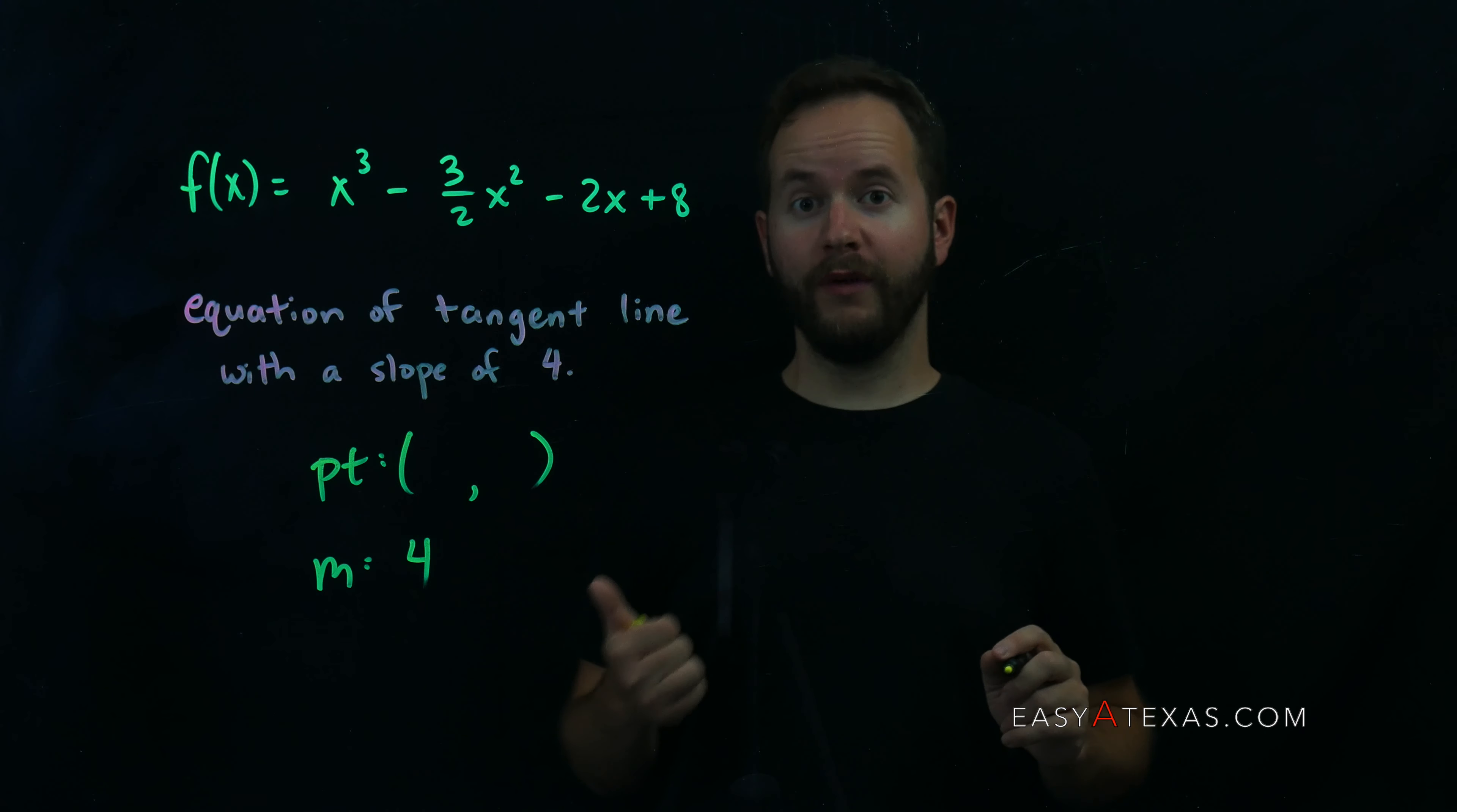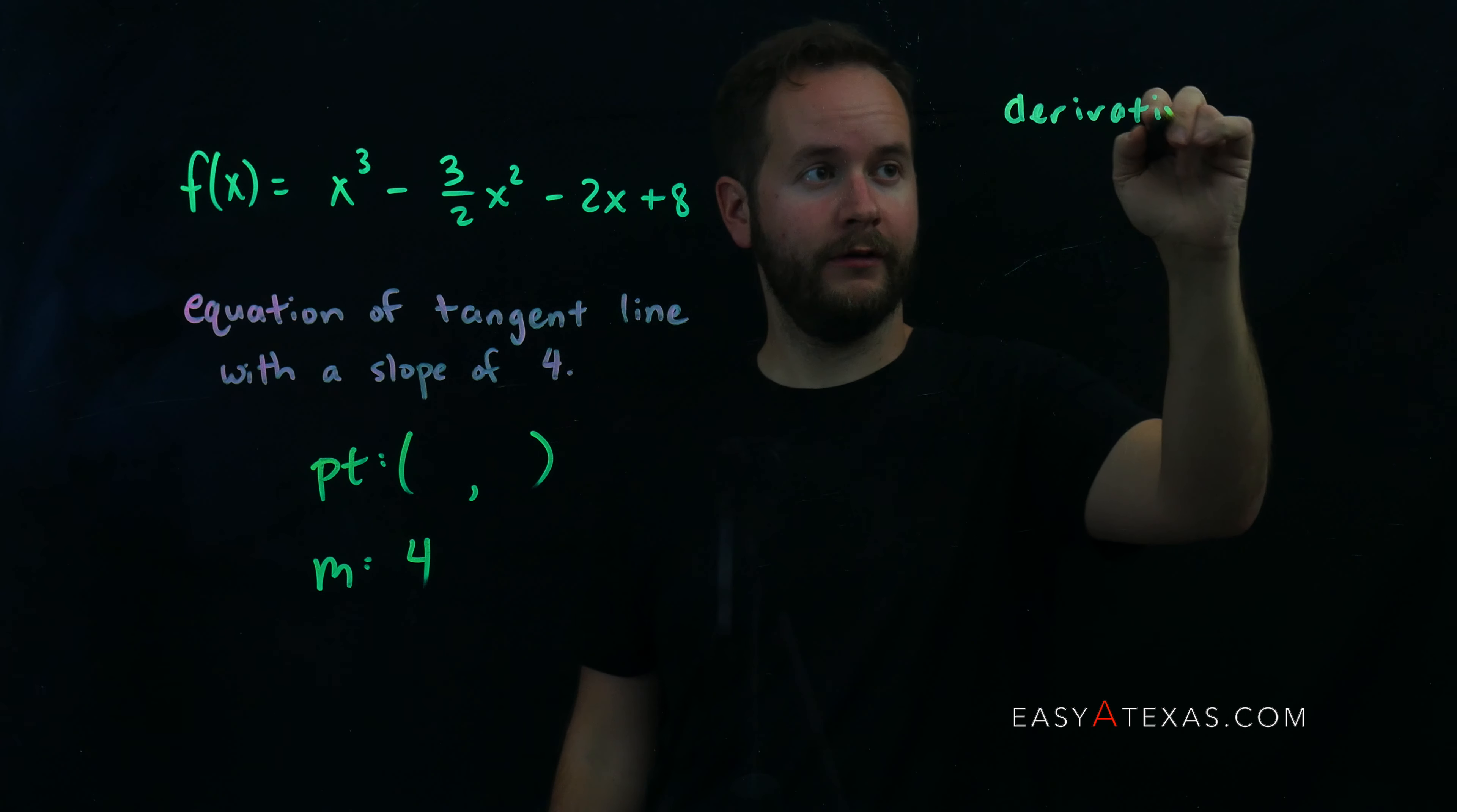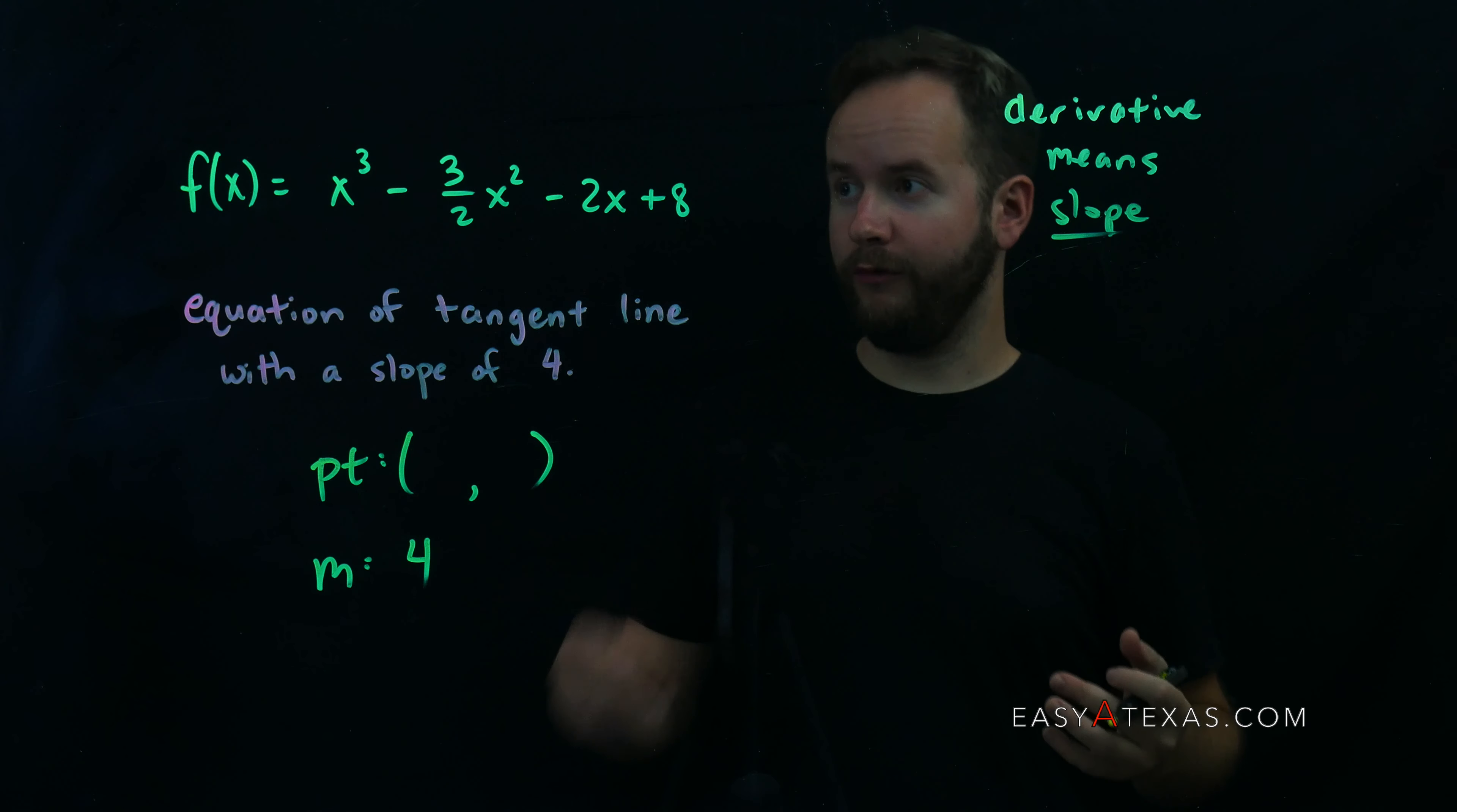Well, in this case we want to use the fact that the derivative means slope. So one thing to take away from this class is that derivative means slope. We are told that the slope is 4, so that means the derivative is equal to 4.